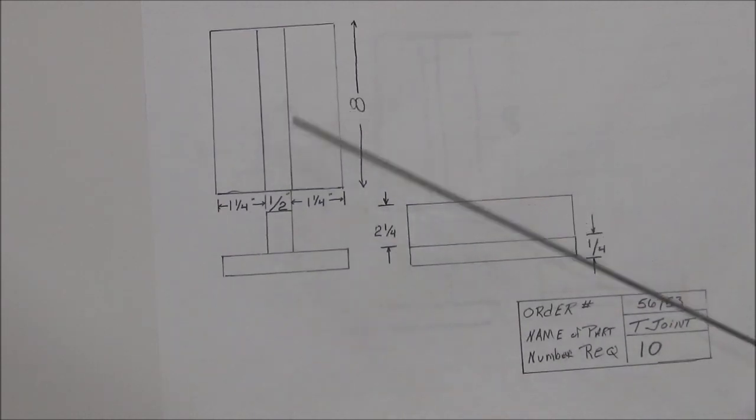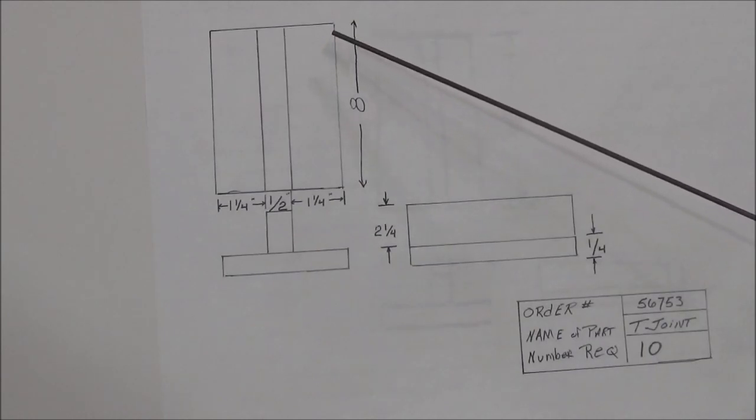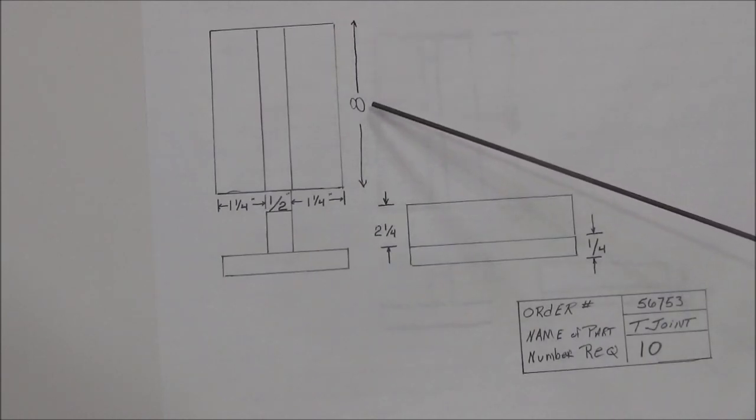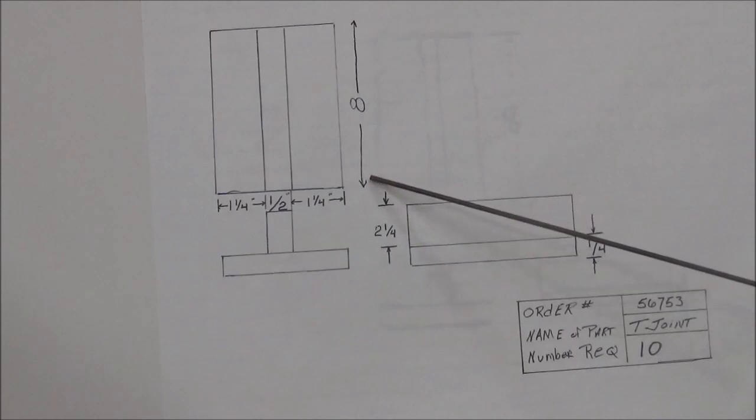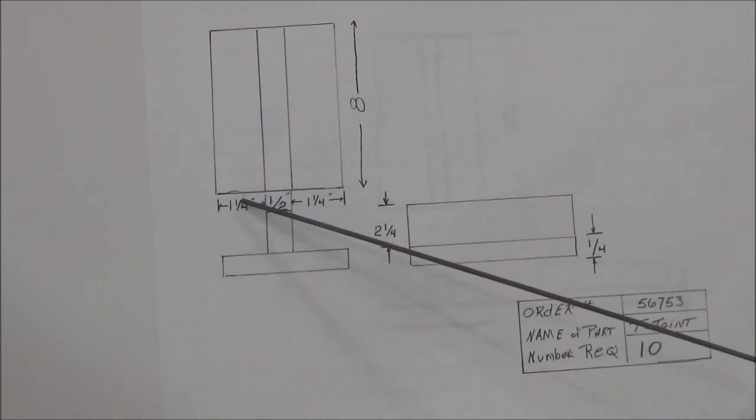Now, let's take a look here. Very simple T-joint here. Top, front, right side view. We can tell from this piece right here, from our top view, that it is 8 inches long. Okay? Now, let's take a look down here at our width.